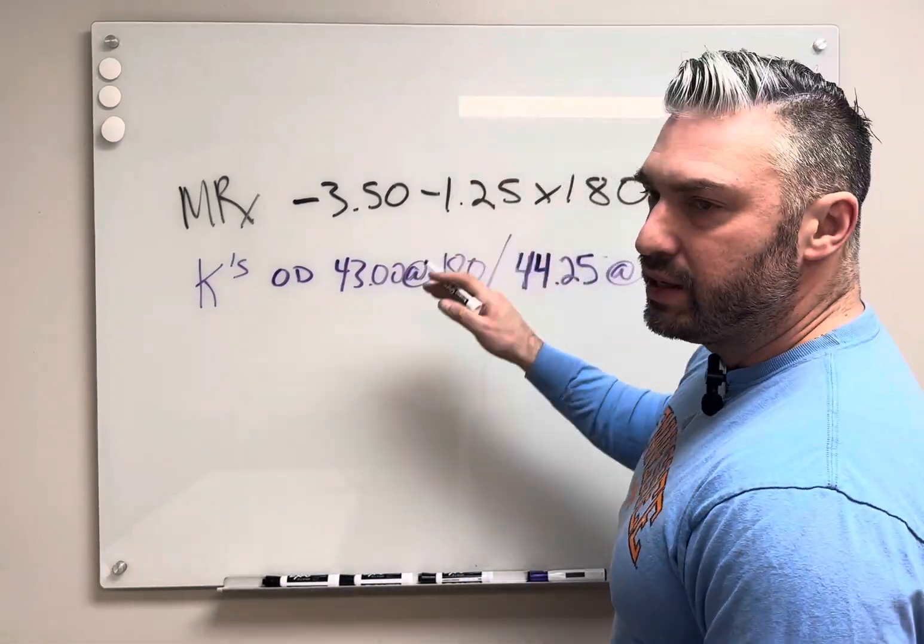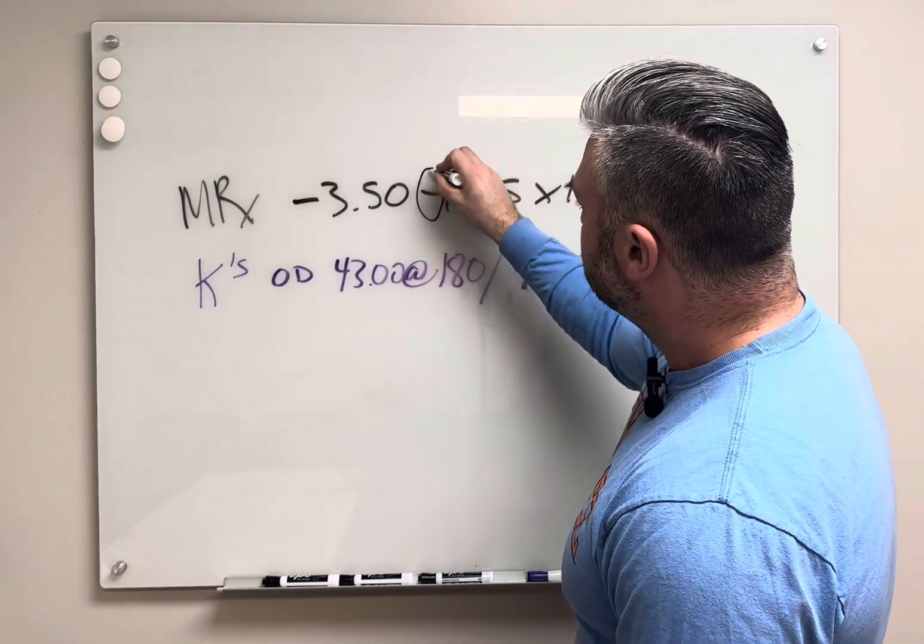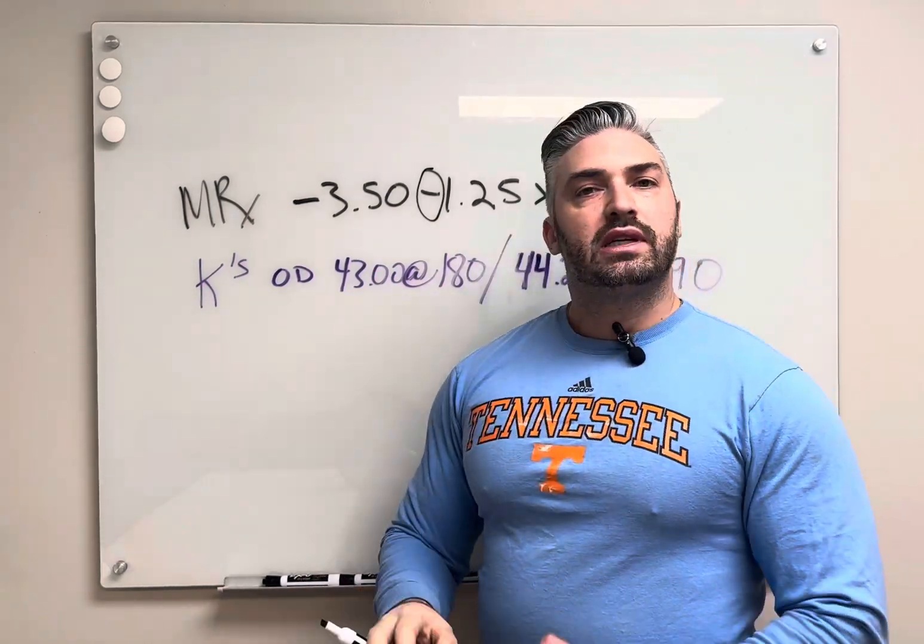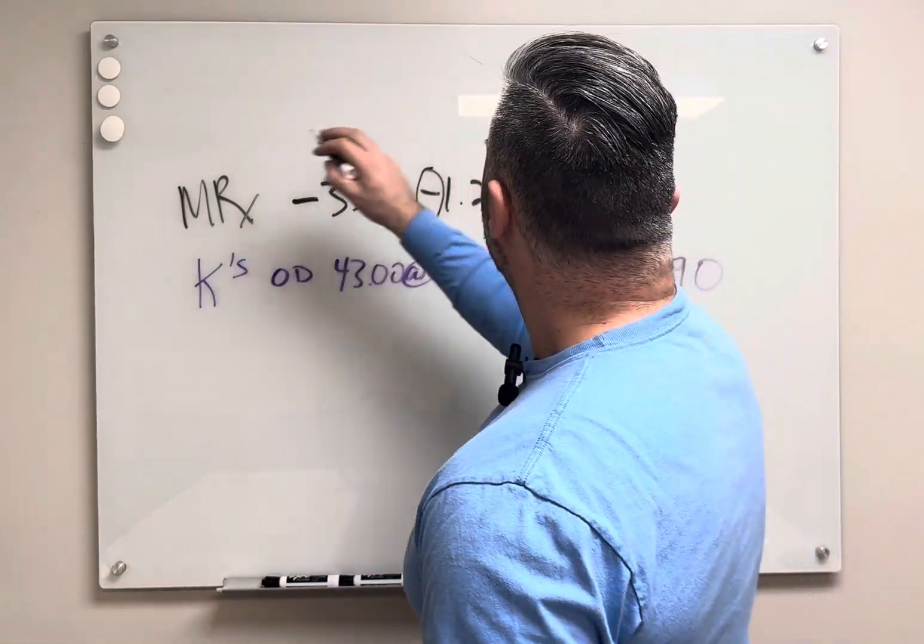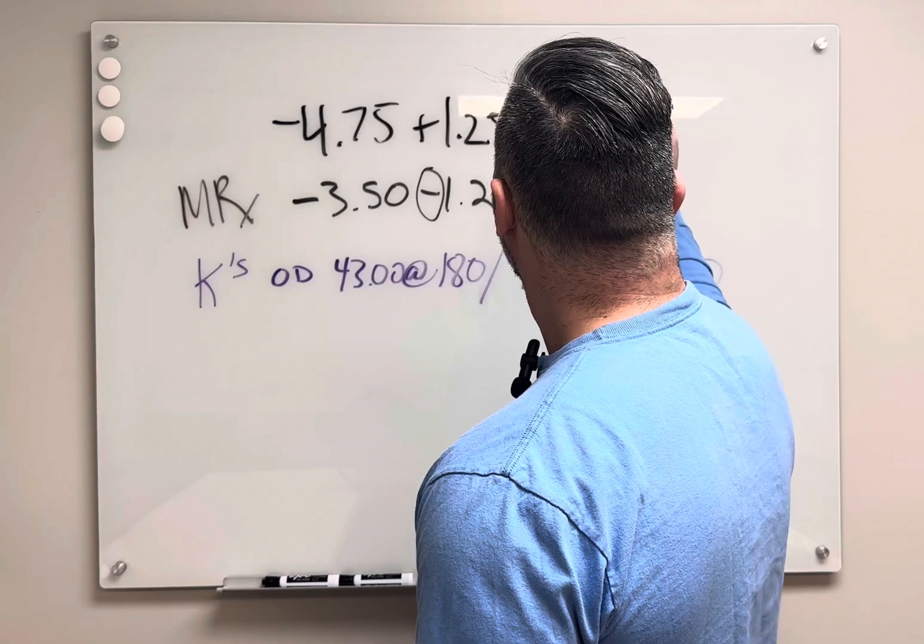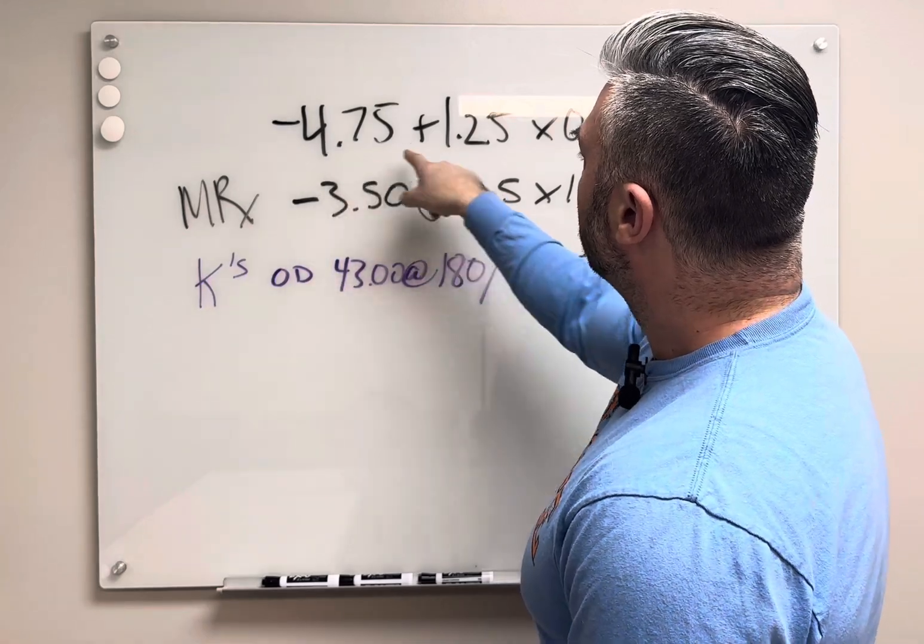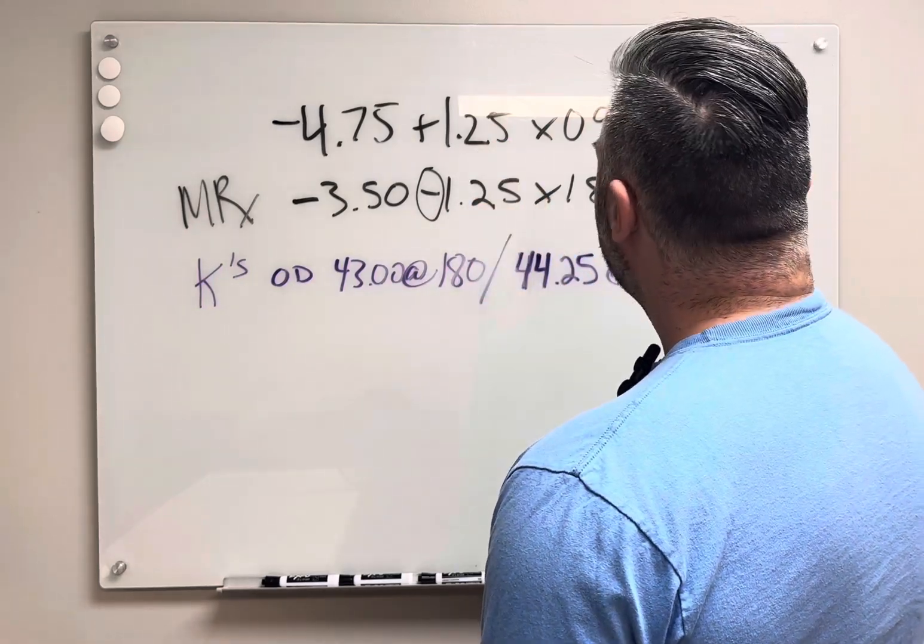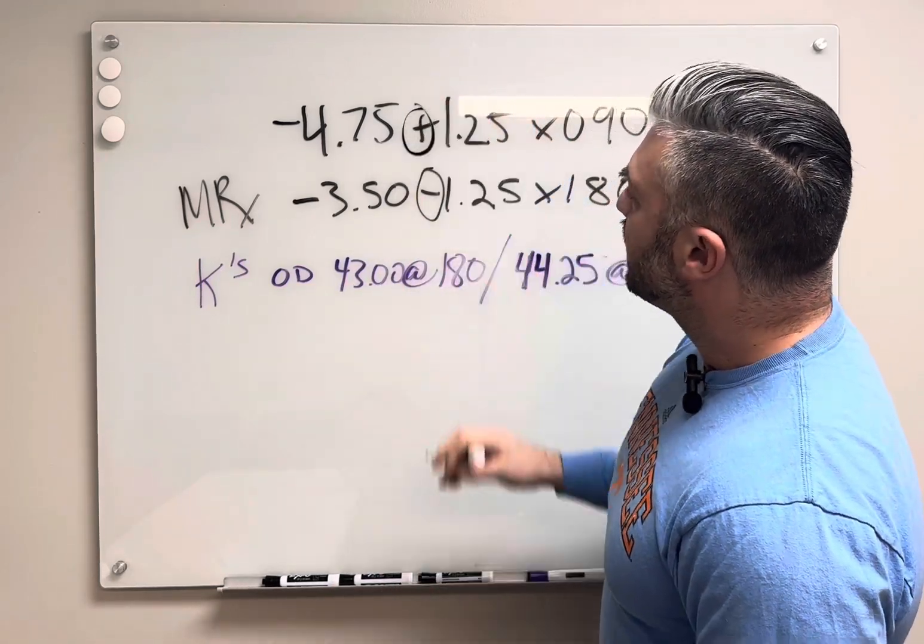So notice some things when looking at this example. We see that it's in minus cylinder form: negative 3.50 minus 1.25 at 180. The first thing to do with contact lenses, we always fit in minus cylinder form. So what if the prescription looked like this? A lot of times on the NCLE you'll get a question and it'll look kind of funky like this, where it might be minus 4.75 plus 1.25 at axis 90.